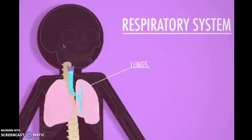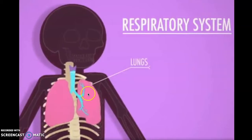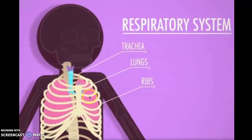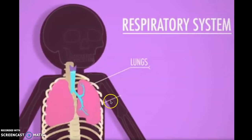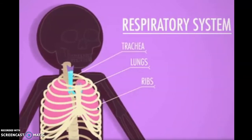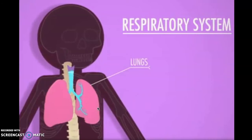Hello everyone, welcome to my YouTube channel. Today my video is on the topic of the human respiratory system. First we will study the anatomy of the respiratory system. These are the lungs in pink color, these are the rib cage which protect the lungs, this is the diaphragm, and this is the trachea. The diaphragm contracts while we breathe in and the diaphragm relaxes while we breathe out.